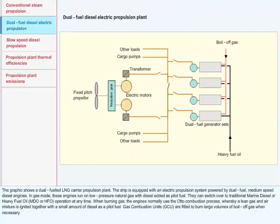Dual Fuel Diesel Electric Propulsion Plant: The graphic shows a dual-fueled LNG carrier propulsion plant. The ship is equipped with an electric propulsion system powered by dual-fuel medium-speed diesel engines. In gas mode, these engines run on low-pressure natural gas with diesel added as pilot fuel.